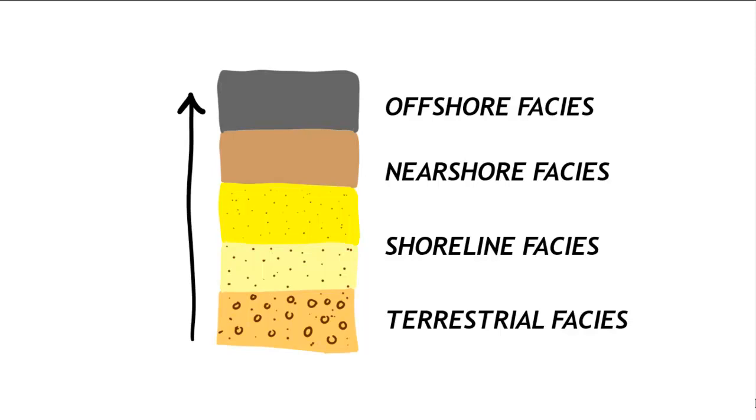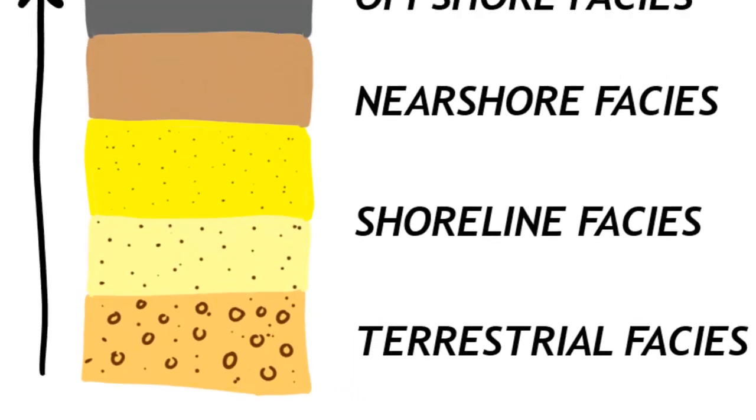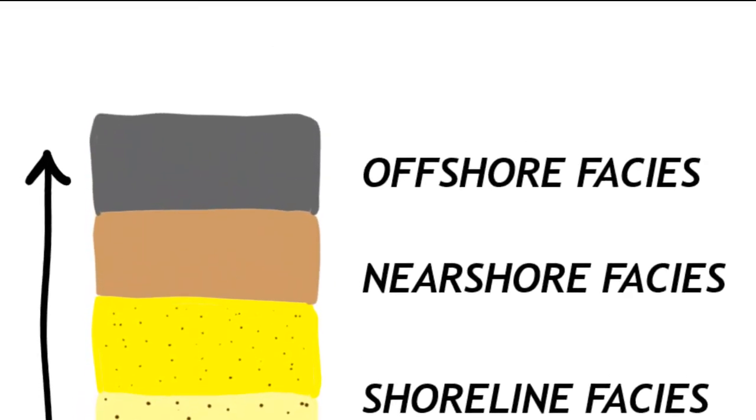So if we have this pattern that's coarse at the bottom and fine at the top, that's called a fining upward pattern. And it implies that sea level must have gone up at that location to take us from an original deposit that is terrestrial to a later deposit that is marine.